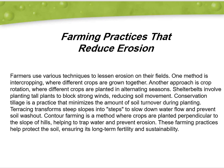Terracing transforms steep slopes into steps to slow down water flow and prevent soil washout. Contour farming is a method where crops are planted perpendicular to the slope of a hill, helping to trap water and prevent erosion. These farming practices help protect the soil, ensuring its long-term fertility and sustainability.